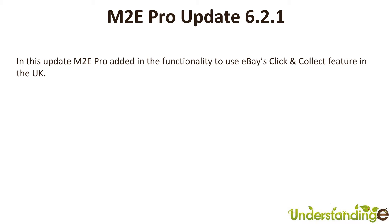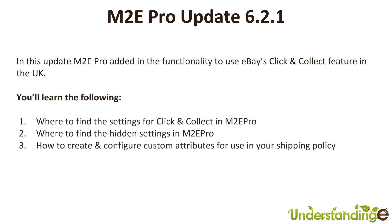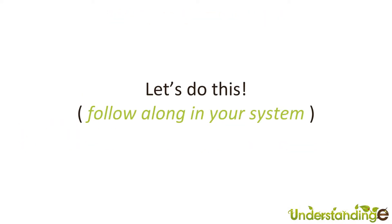Dave, what are we going to learn in this tutorial? So Matt, we're going to firstly look at where to find the settings for click and collect in M2e Pro. We're then going to look at where to find the hidden settings in M2e Pro, because they really are hidden. I've seen some comments in the forums saying I've found the yes box to activate it but that's it. We're going to show you where the hidden settings are as well. And finally we're going to show you how to create and configure some custom attributes for you to use in your shipping policy. With that said, let's go and do this and follow us along in your Magento system.